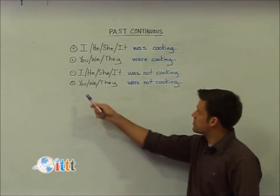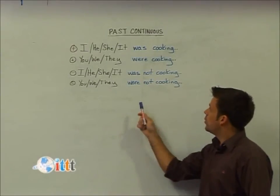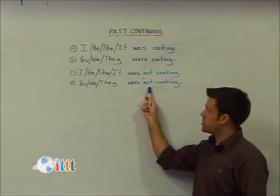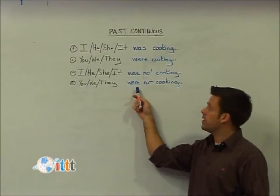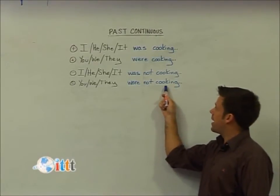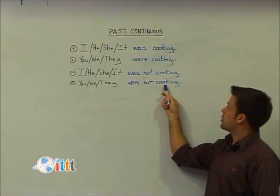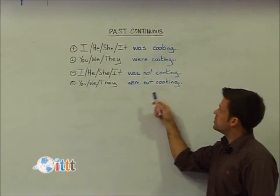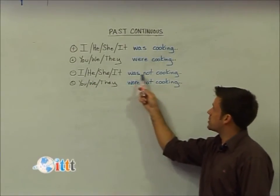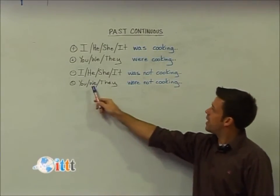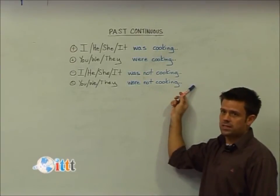In order to form the negative sentence for the past continuous, we add the word not in between the past form of the helping verb to be and our main verb, which here is cooking. We have he was not cooking last night and we were not cooking last night.